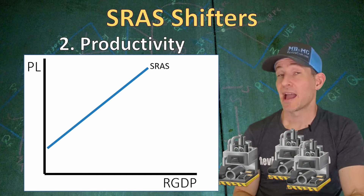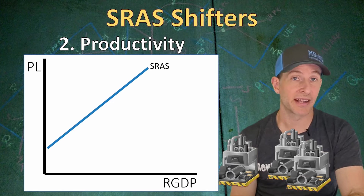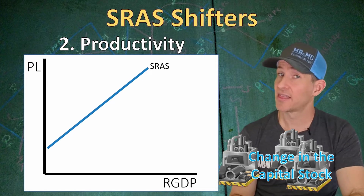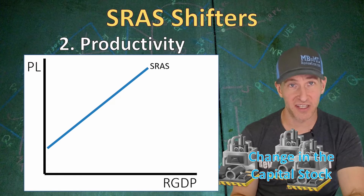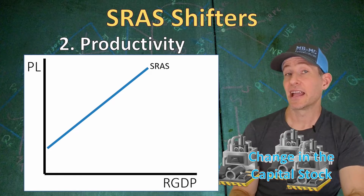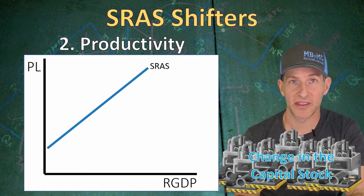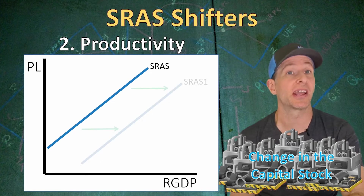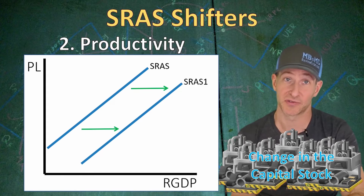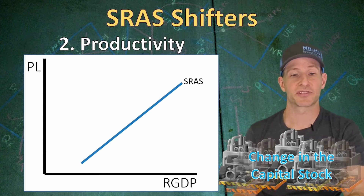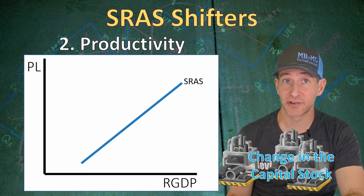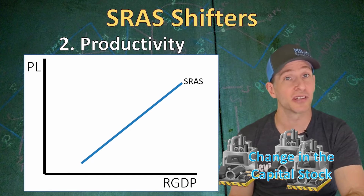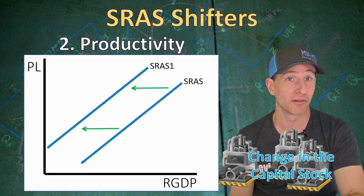Next we have productivity, and the main factor that impacts productivity is a change in physical capital stock. The capital stock is the amount of physical capital within an economy. If we have an increase in the capital stock, that's going to increase the productivity of workers, and we will see a rightward shift of the short run aggregate supply curve. If there's a decrease in the capital stock, that's going to decrease productivity as there is less capital per worker, and that means lower output per worker hour.